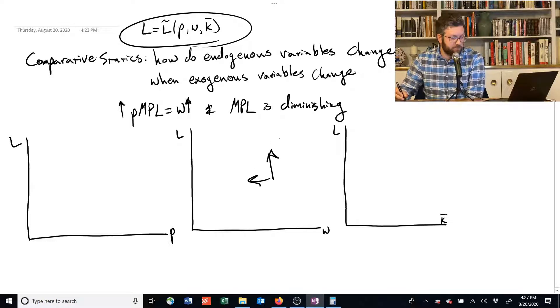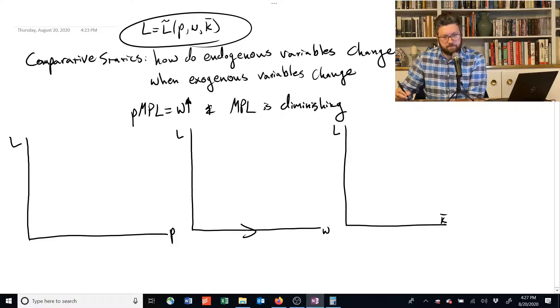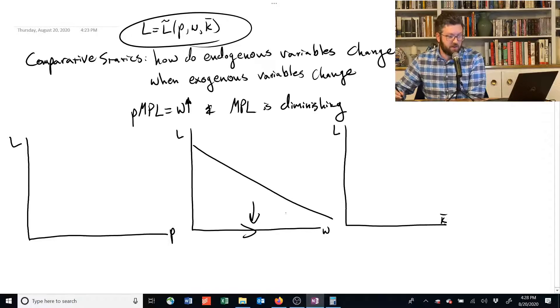We end up with something that looks like... I should have drawn it this way. If you raise the wage rate because it's on the horizontal axis, this thing goes down. And we get some kind of function like this.